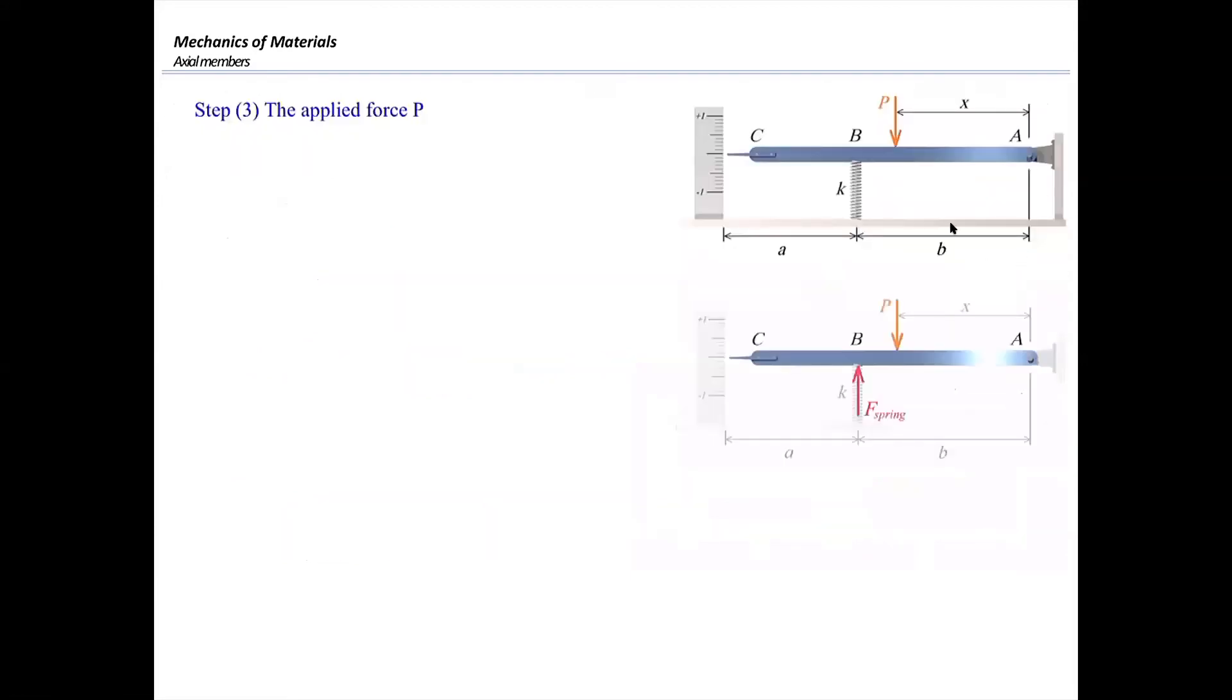The free body diagram is shown here. This handle is taken out. There will be two forces: one is the force developing in spring, F-sub-spring, and another external force acting at distance X from the right support, which is P. Also, there will be two reaction forces at point A. But I'm not interested in determining the magnitude of those forces.